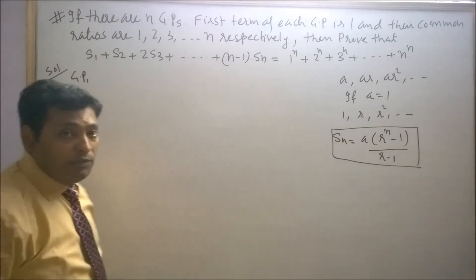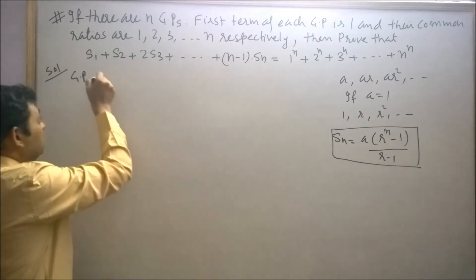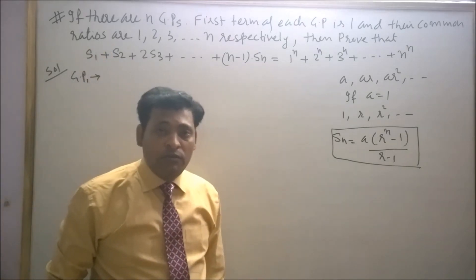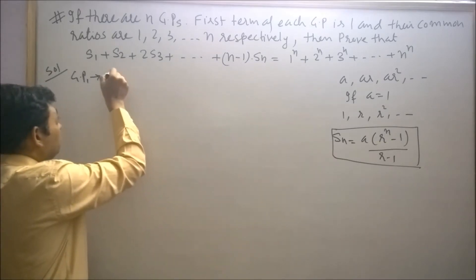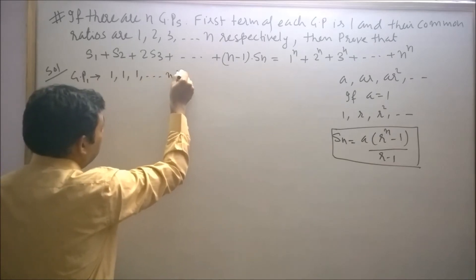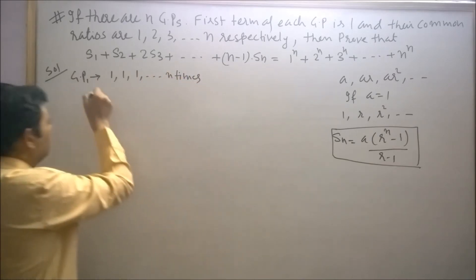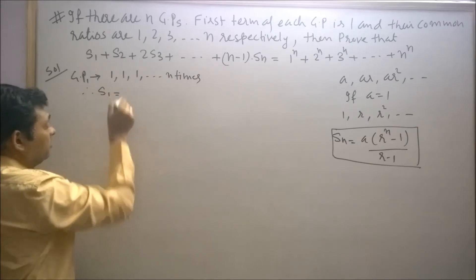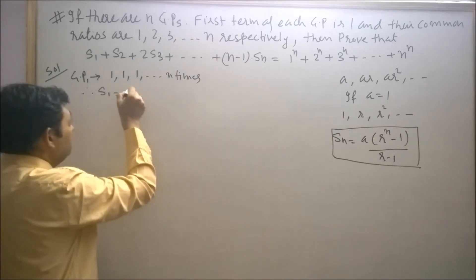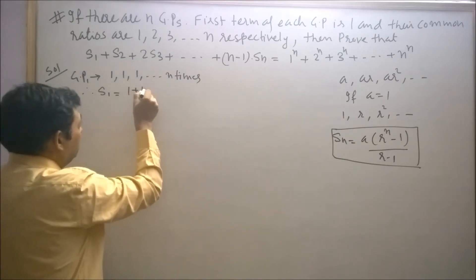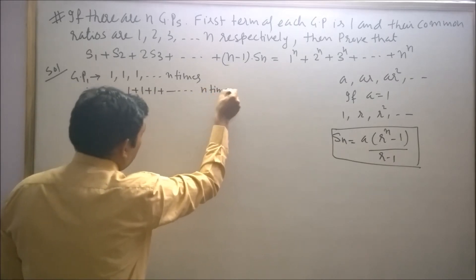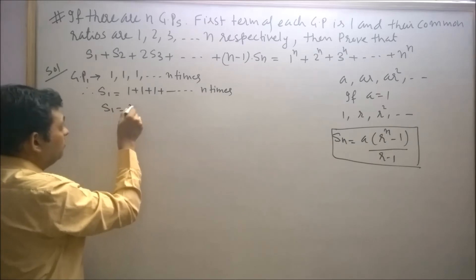GP1 can be represented as: since the first term is 1 and common ratio is 1, it will be 1, 1, 1, 1 — N times. Therefore S1, the sum of the first N terms of this GP, is 1 plus 1 plus 1 N times, so S1 is equal to N.